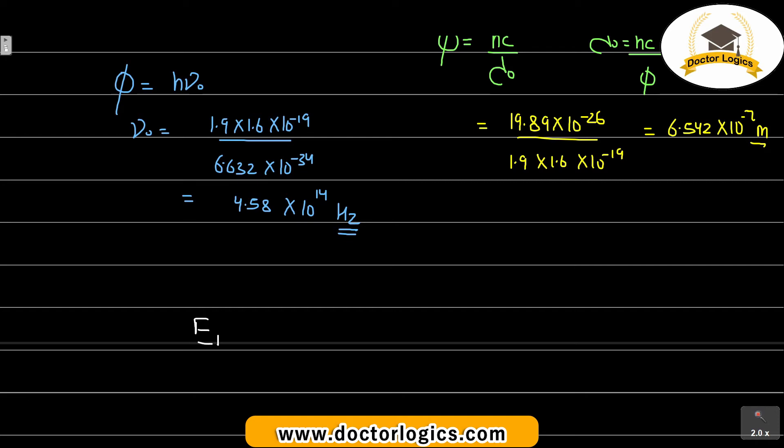We know that the energy we provide equals work function plus kinetic energy. So energy that we provided is hc by lambda, which is 500 nanometer, which is 500 times 10 to the minus 9 meter basically.